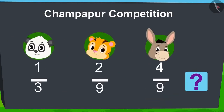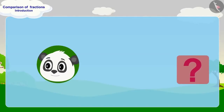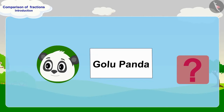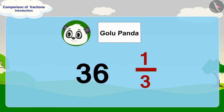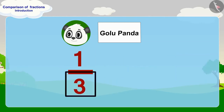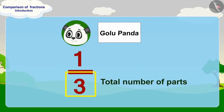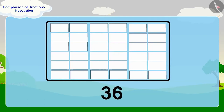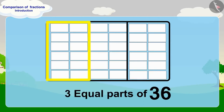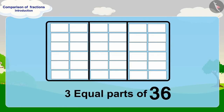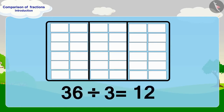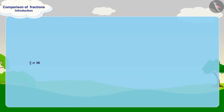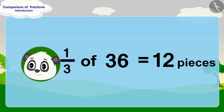Children, can you tell who is the winner of the competition? Let's find out how many pieces of paper Golu wrote his name on. Golu's name is written on one-third of 36. The number 3 tells us how many equal parts to divide into, and 1 tells us we take one part. If we make 3 equal parts of 36, each part has 12 pieces. So 36 divided by 3 is 12 pieces. One-third of 36 is 12. Golu wrote his name on 12 pieces of paper.